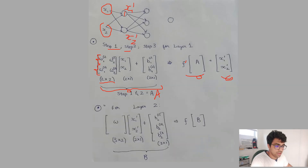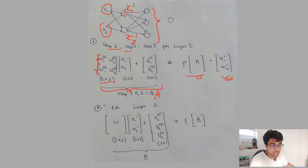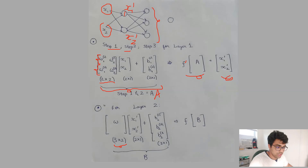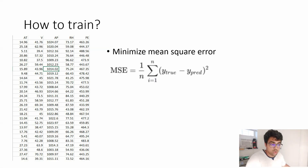For the second layer with three neurons, we stack the weights into a 3×2 matrix. Multiplying a 3×2 matrix by the 2×1 input gives a 3×1 matrix. We add a 3×1 bias vector and then apply the activation function again to get the layer's output.